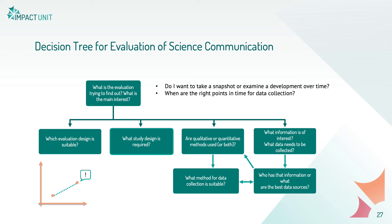After that you can decide on the right moment for the data collection, which depends on the type of information you are interested in and when it is accessible. And lastly, you'll ask yourself if you are able to collect all data of interest exhaustively — so ask all participants, read all the social media comments, etc. — or if you are happy with a sample. Here you need to find the balance between sound, reliable results and the resources at your disposal. If you choose a sample, the strategy of how to get to that sample is also a follow-up question to think about.